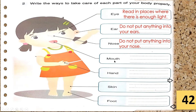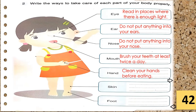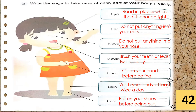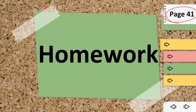For the mouth: brush your teeth at least twice a day. For the hand: clean your hands before eating. For the skin: wash your body at least twice a day. For the foot: put on your shoes before going out. That is the end of our activity — let's move on to our homework.